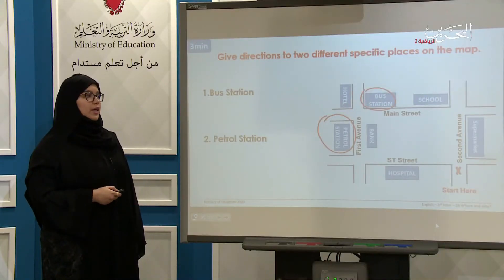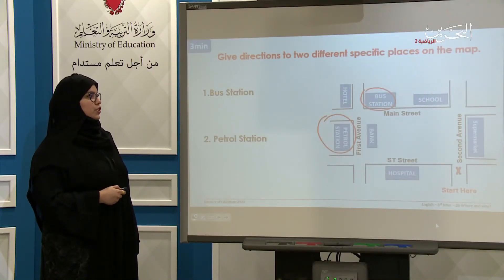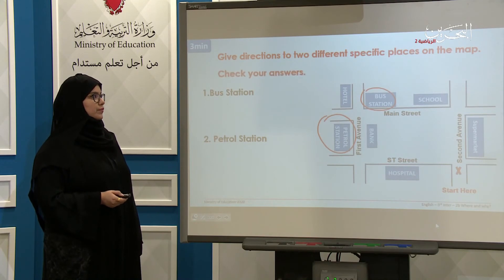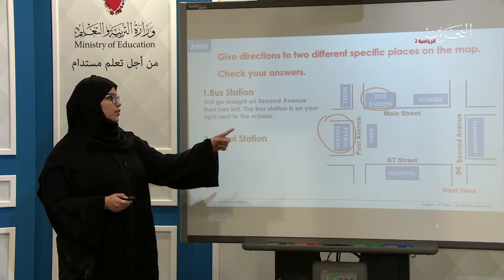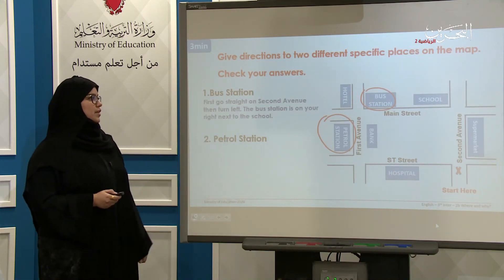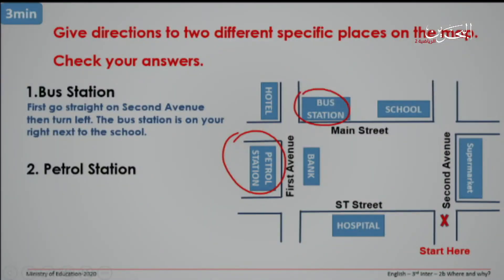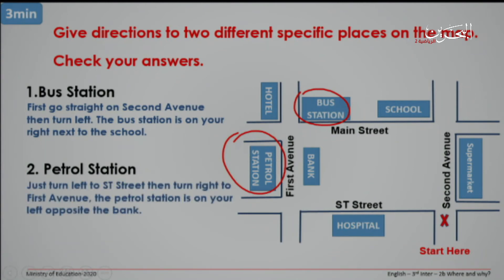Now let's check our answers. To reach the bus station: go straight on 2nd Avenue, then turn left and the bus station is on your right, next to the school. To reach the petrol station: turn left on St. Street, then turn right to 1st Avenue and the petrol station is on your left, opposite the bank. Now we're done, let's go to Task number 5.